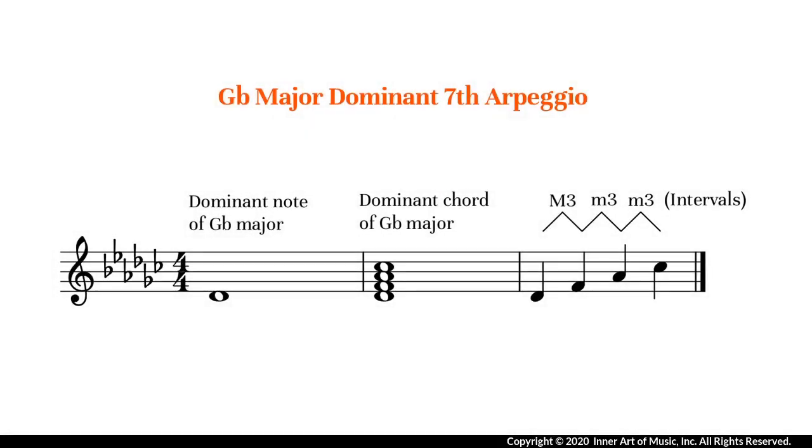In music, dominant refers to the fifth note of the scale. In Gb major, the dominant note is Db. So a dominant seventh chord of Gb major is a chord built on Db.